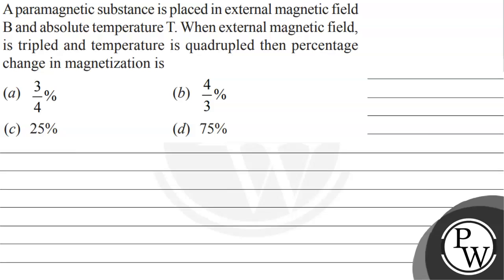Hello Bacho, let's see the question. In this question, a paramagnetic substance is placed in external magnetic field B and absolute temperature T. When external magnetic field is tripled and temperature is quadrupled, then percentage change in magnetization is: Option A is 3/4 percent, option B is 4/3 percent, option C is 25 percent, and option D is 75 percent.